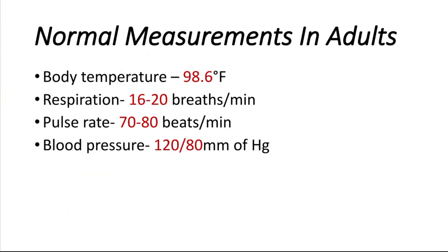The normal measurements in adults: the body temperature of a normal adult is 98.6 degrees Fahrenheit. The normal respiration rate of an adult is 16 to 20 breaths per minute. The unit is breaths because the respiration counts the breathing.